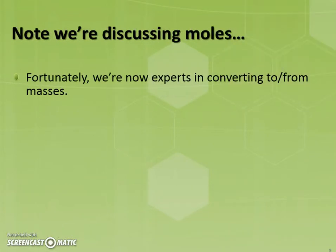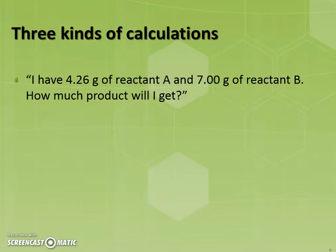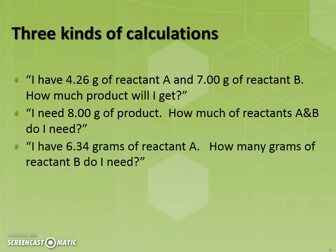But we're talking about moles there, and what we typically get and are asked to report is grams. The good news is we're experts in converting to and from masses. So let's talk about the three kinds of calculations we might need to do. First: I have 4.26 grams of reactant A and 7 grams of reactant B — how much product will I get? Second: you need 8 grams of product — how much of each reactant A and B do you need? Third: you have 6.34 grams of reactant A — how many grams of reactant B do you need to react all of that? There are three different questions, but all of them are extremely similar.